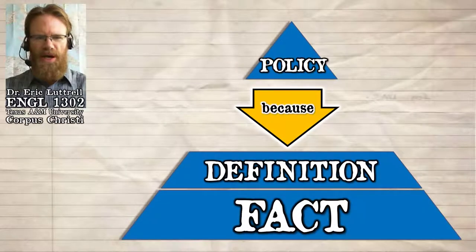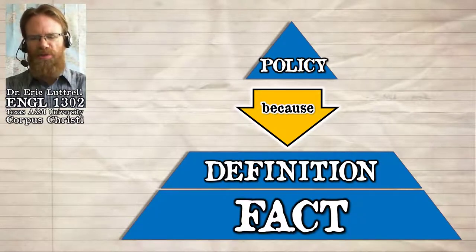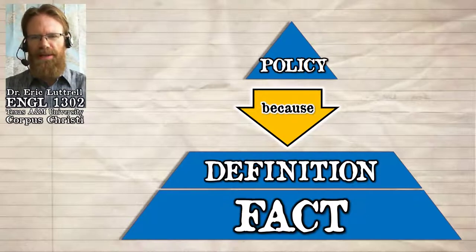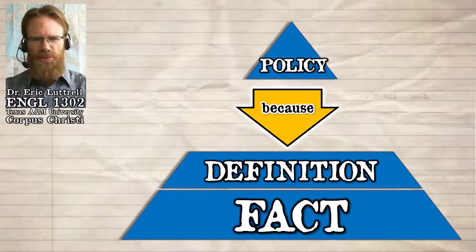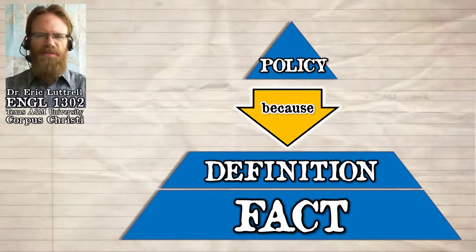Once we have well-documented, verifiable facts, we have defined our concepts, we have defined exactly which facts we're going to try to make use of and explain, we're very specific about the concepts we use to classify and categorize those facts. We've got a couple more things to check on before we're ready to make a policy decision or advocate a particular type of policy.